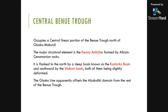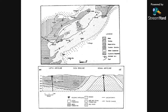The central Benue Trough occupies the central linear portion of the Benue Trough, from Boko northward to Makurdi. The major structural element is the Keana Anticline, formed by Albian to Cenomanian rocks. It is flanked to the north by the deep Kerri-Kerri Basin and southwards by the Bukuru Basin, both slightly deformed. The Boko Line offsets the Abakaliki domain from the rest of the Benue Trough. A geologic map and cross-section illustrate the Keana Anticline and the synclines on both flanks.